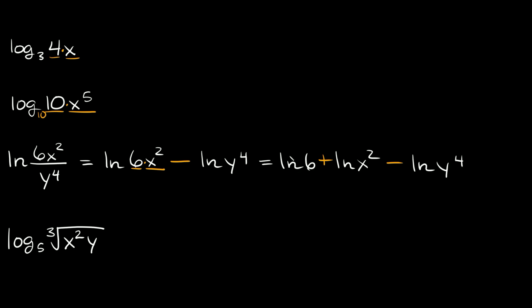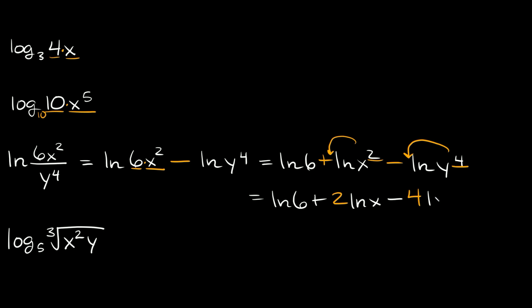So this becomes the natural log of 6 plus the natural log of x squared, minus the natural log of y to the fourth. The natural log of 6 is already simplified. We have exponents on x squared and y to the fourth, so we throw them out in front of the logs. This gives us the natural log of 6 plus 2 times the natural log of x minus 4 times the natural log of y — that's the expanded form.